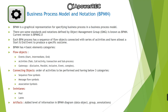Swim lanes is the third basic element of BPMN, which provides a visual mechanism of organizing and categorizing common activities in a process diagram. It consists of two types: pool and lanes. Pool represents major participants in a process, typically separating different organizations, whereas lanes are used to organize and categorize activities within a pool according to a common function or role.